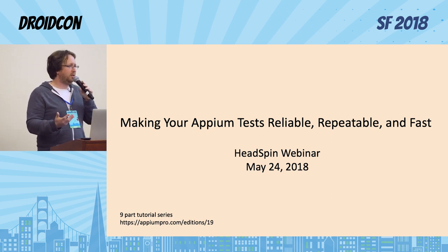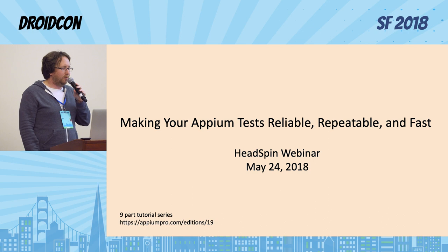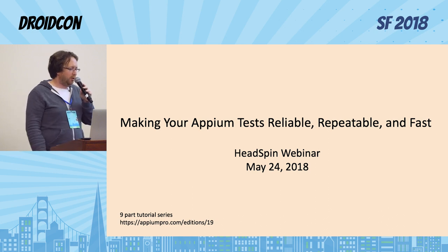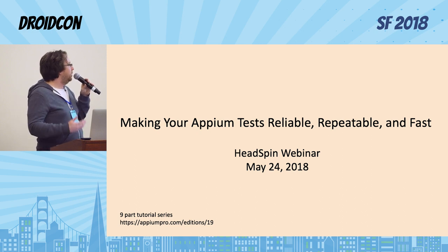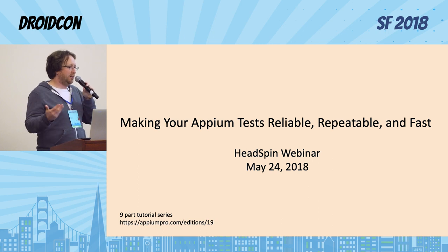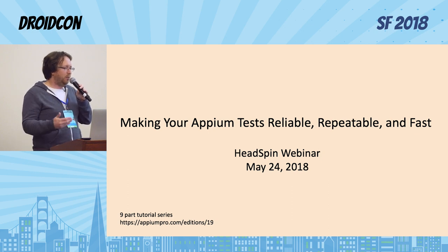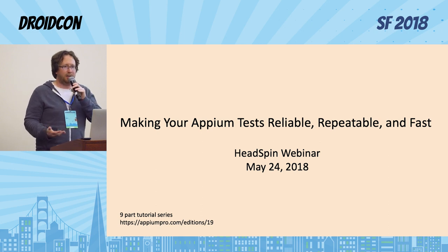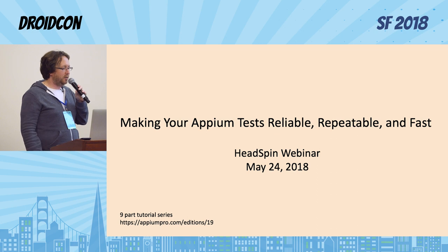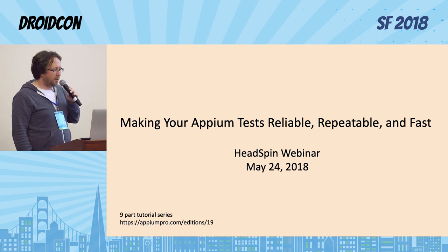You can deal with tests failing every other run and still get useful data. We put on a webinar earlier this year on YouTube, done with the lead architect of Appium — someone who created and maintains Appium. He actually went and created a nine-part tutorial series about everything in this webinar — how to really think about real-world automation using real devices, how to get real data from automation. You can find that on the Appium Pro link shown here — that's the first of the nine-part series.